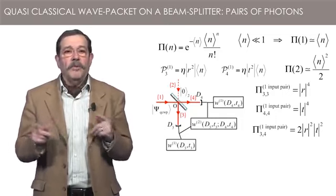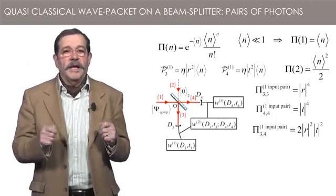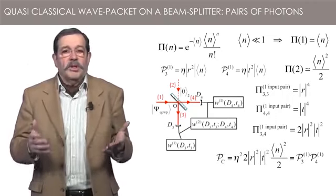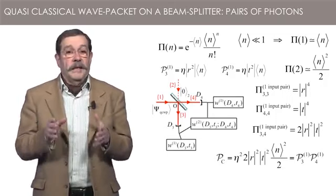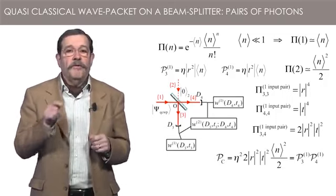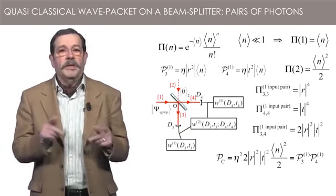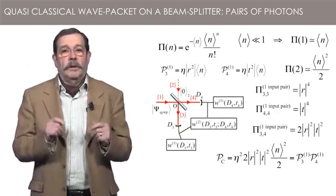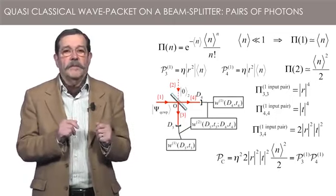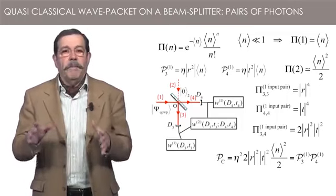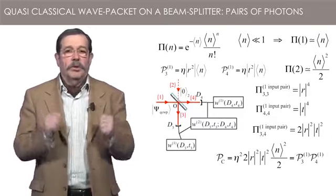Introducing the quantum efficiency eta, we obtain a probability of joint detection equal to the products of single detection. We have thus an interpretation, in terms of photon distribution, of the fact that the probability of a joint detection is equal to the product of the probabilities of single detections. It stems from the fact that there are pairs of photons with the probability given by the Poisson distribution.